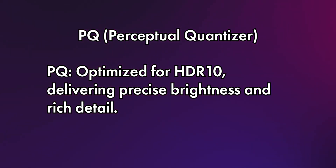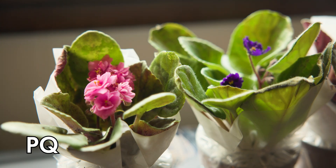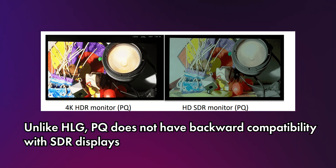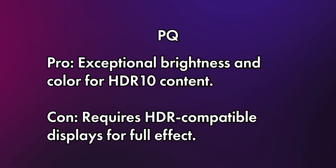So what is PQ? HDR PQ is based on the ST2084 standard and is optimized for mastering HDR10 content. HDR10 is a widely used HDR standard that offers an expanded range of brightness and colors compared to SDR — we're thinking more vivid highlights, richer shadows, and more accurate color reproduction. PQ provides a lot of detail in highlights and shadows, making it ideal for projects where HDR is the primary delivery format. If you're creating content for streaming on a service that supports HDR10, PQ can help ensure your footage takes full advantage of modern displays. But like HLG, PQ doesn't provide the same level of grading flexibility as CLog3, and its compatibility is limited to devices supporting HDR10.